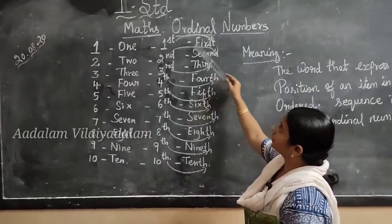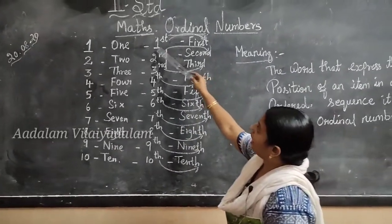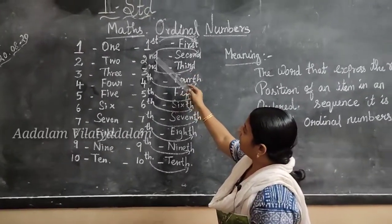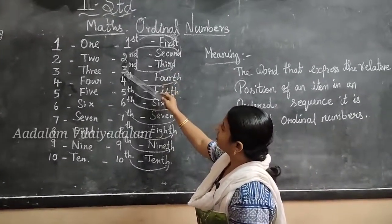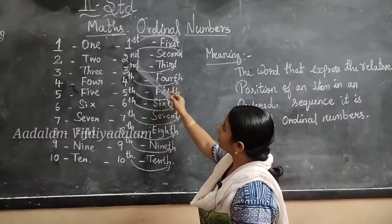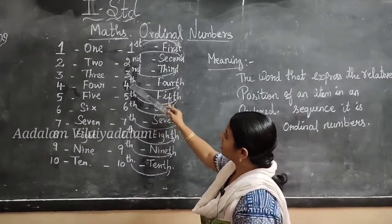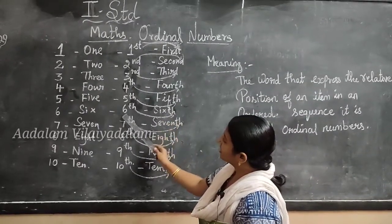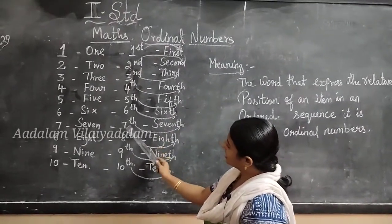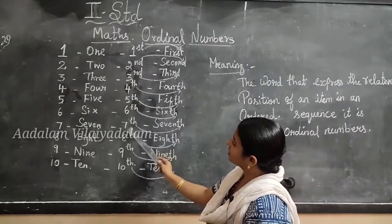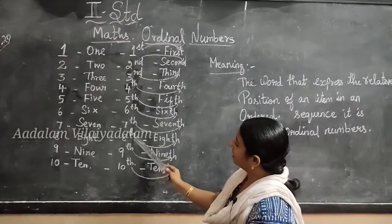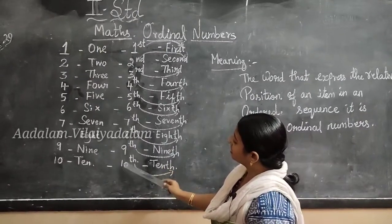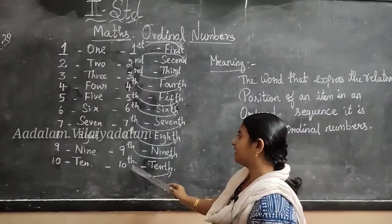Now let's move on to the ordinal numbers. 1st is called first. 2nd is called second. 3rd is called third. 4th is called fourth. 5th is called fifth. 6th is called sixth. 7th is called seventh. 8th is called eighth. 9th is called ninth. 10th is called tenth.